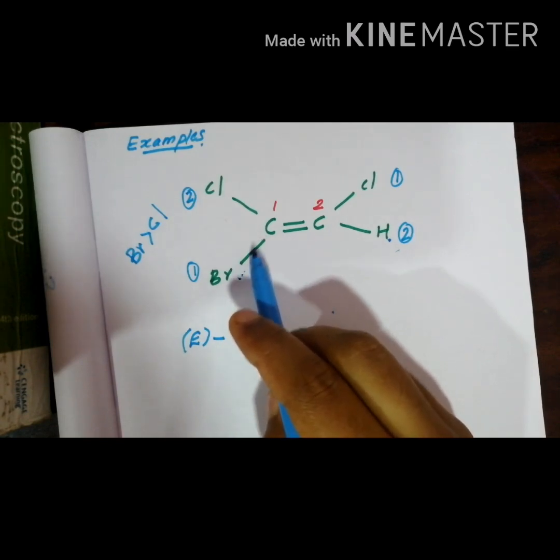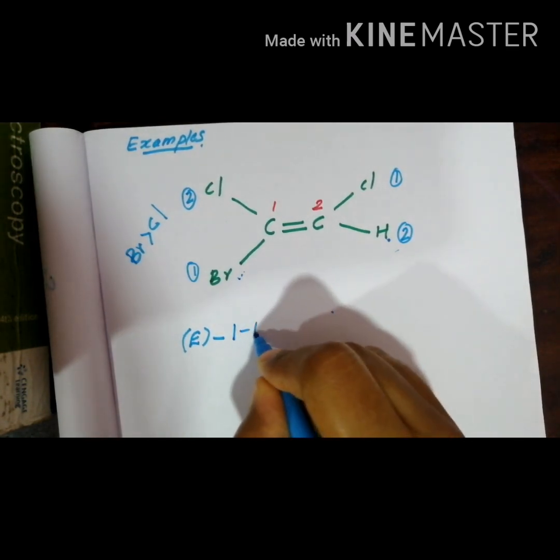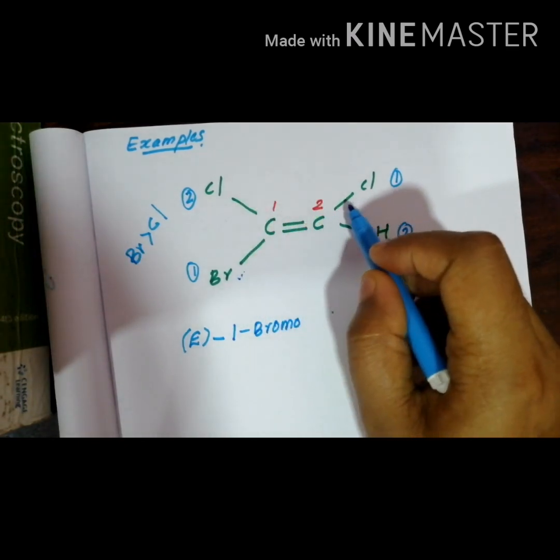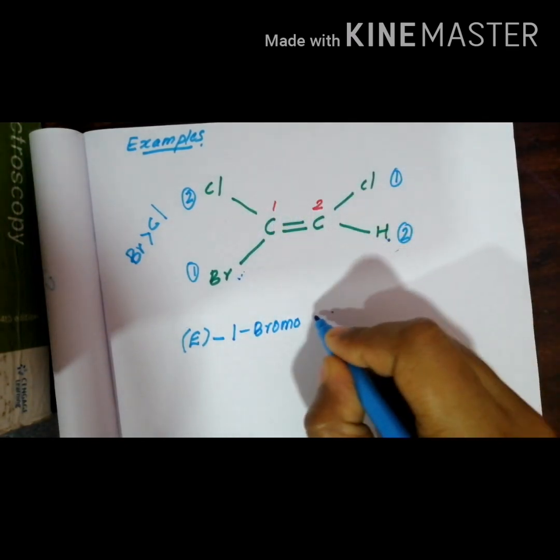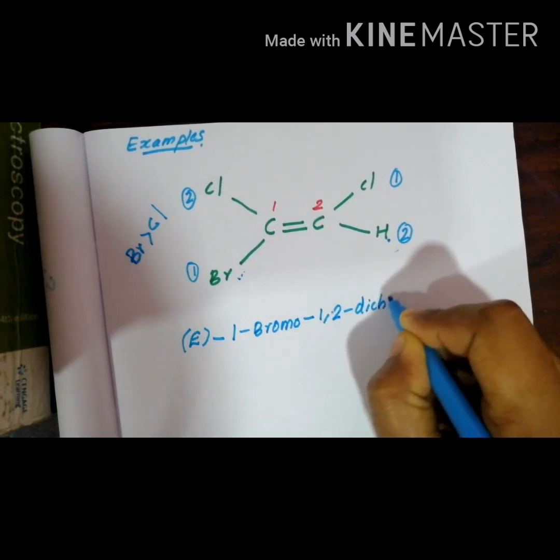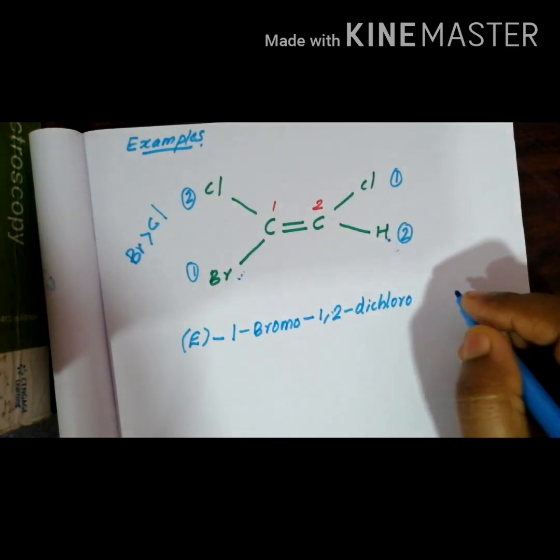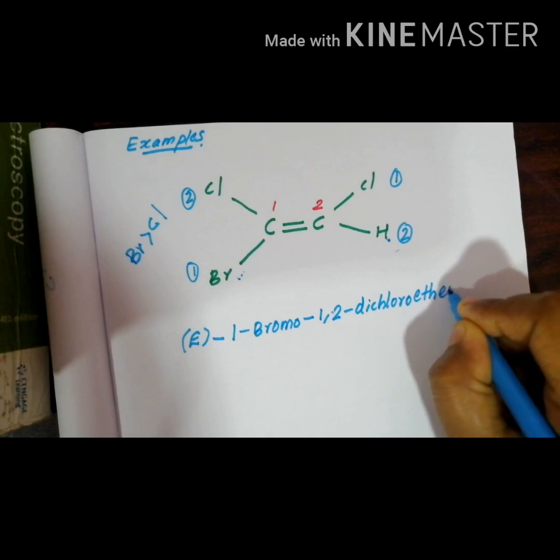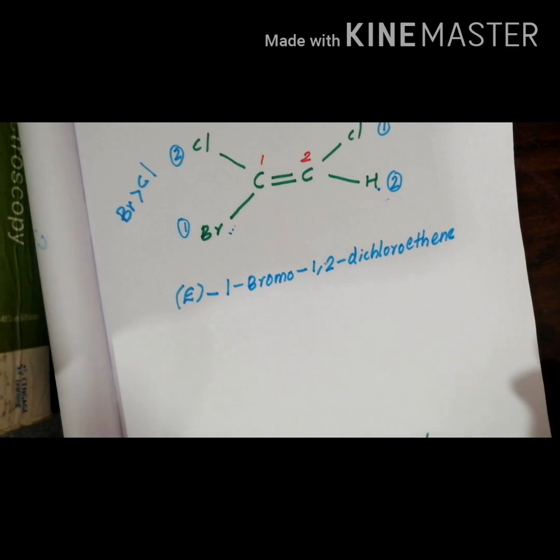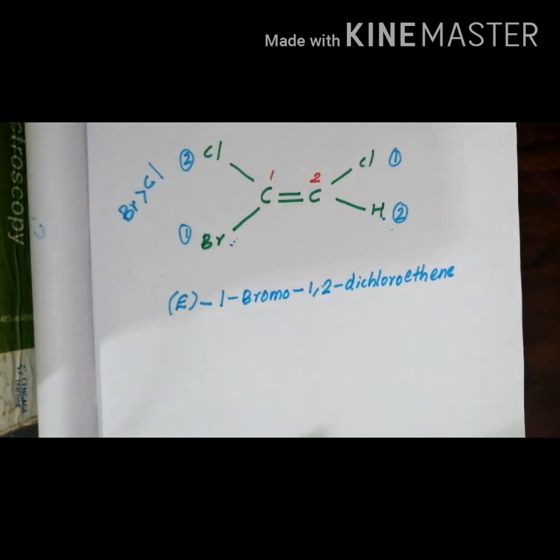Bromine has more priority than Chlorine. That's why you can say 1-Bromo, and Chlorine present in both the carbon 1 and 2. Then 1, 2, 2 carbon means Ethene. You can write Ethene or you can write Eth-2-ene. Both are same. This is example number 1 on basis of chlorine and bromine substitution.